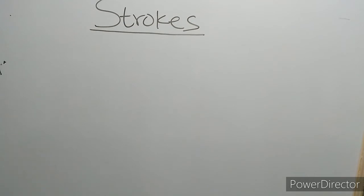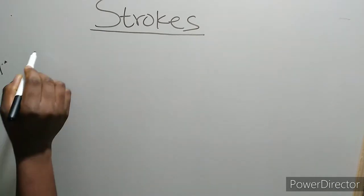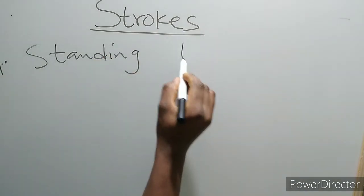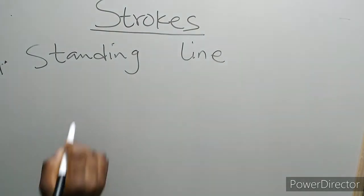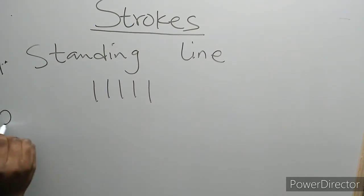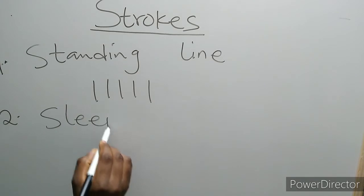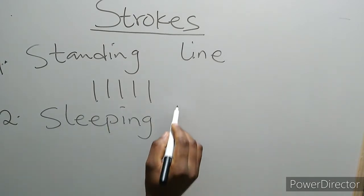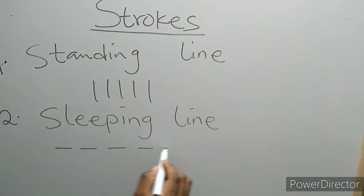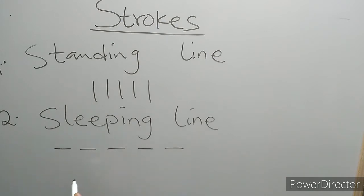So guys, the first one that we are going to talk about is called the standing line, and these are the standing lines. The next one is sleeping line. These are the sleeping line. Examples of the standing line and the sleeping line are we have I, we have L, we have H, we have F, and so on.